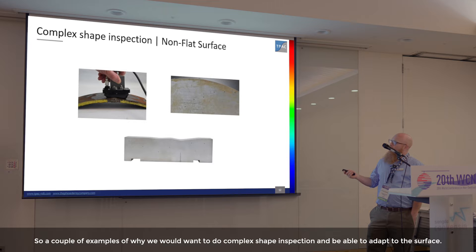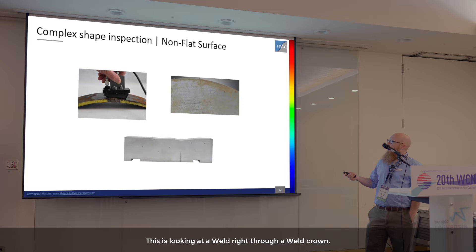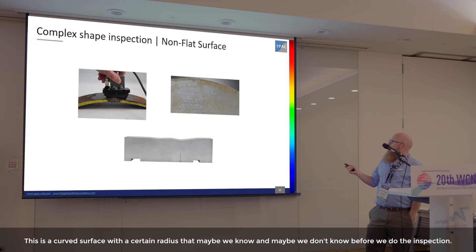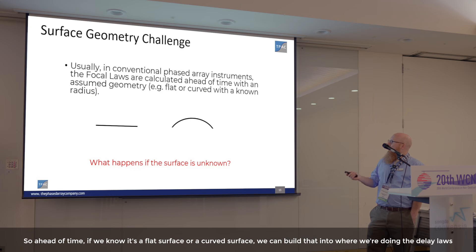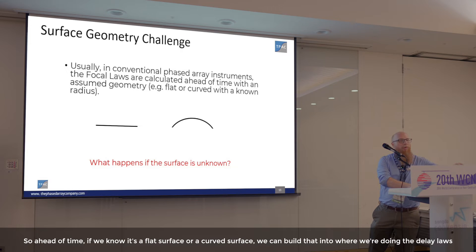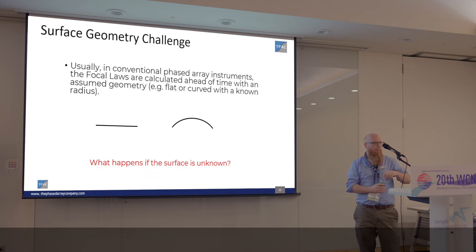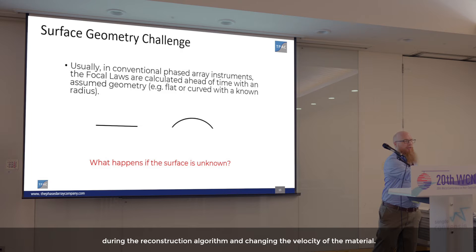Here are examples of why we want to do complex shape inspection and adapt to the surface. This is looking at a weld right through a weld crown — a curved surface with a certain radius that maybe we know and maybe we don't know before the inspection. This block shows a more random, wavy geometry. If we know it's a flat or curved surface ahead of time, we can build that into the delay laws during the reconstruction algorithm while changing the velocity of the material.